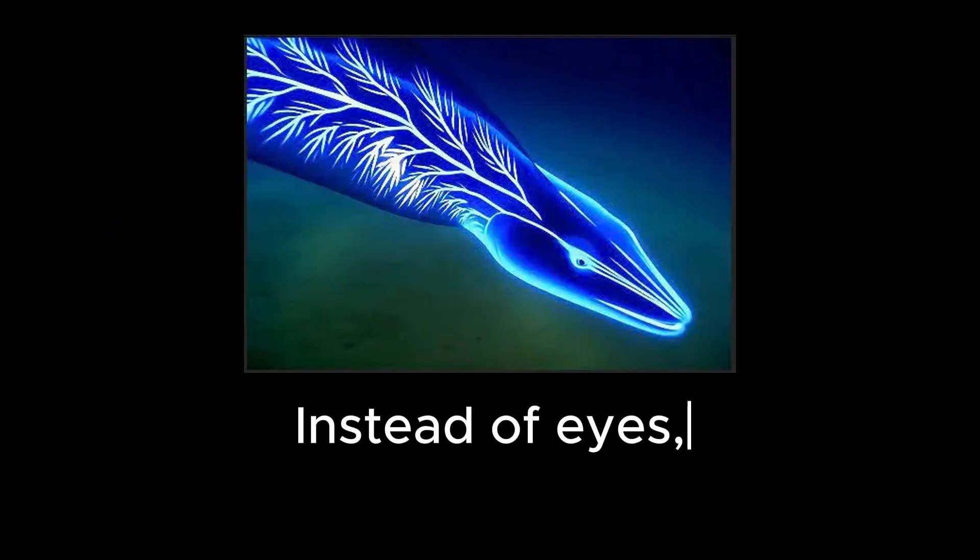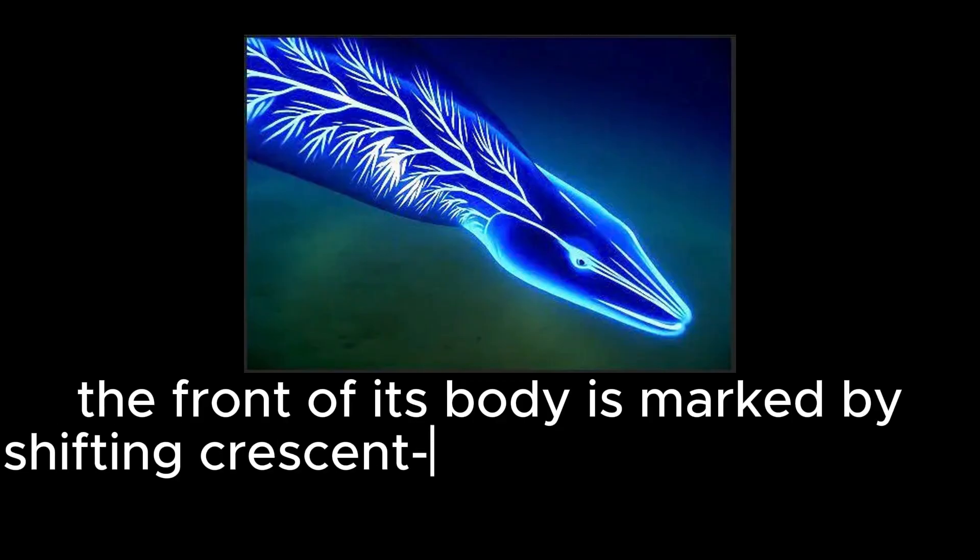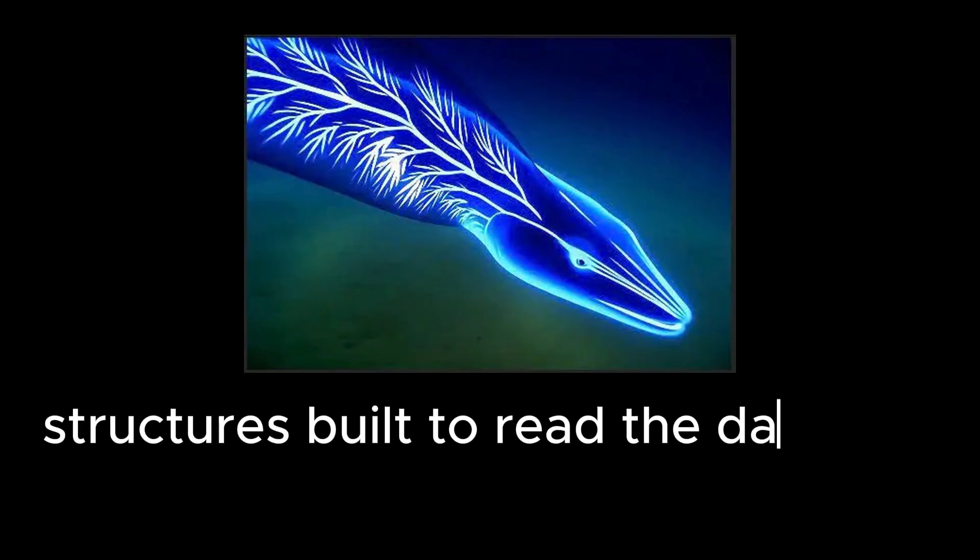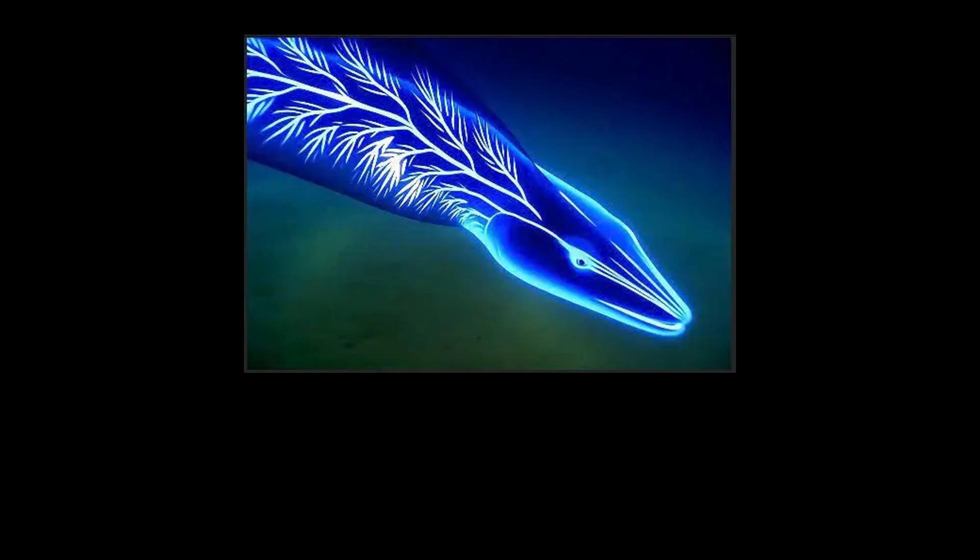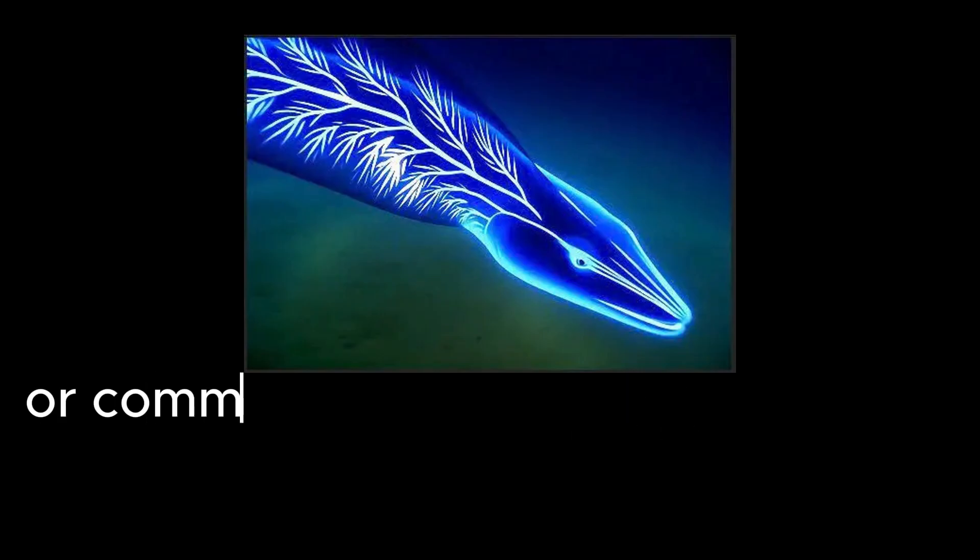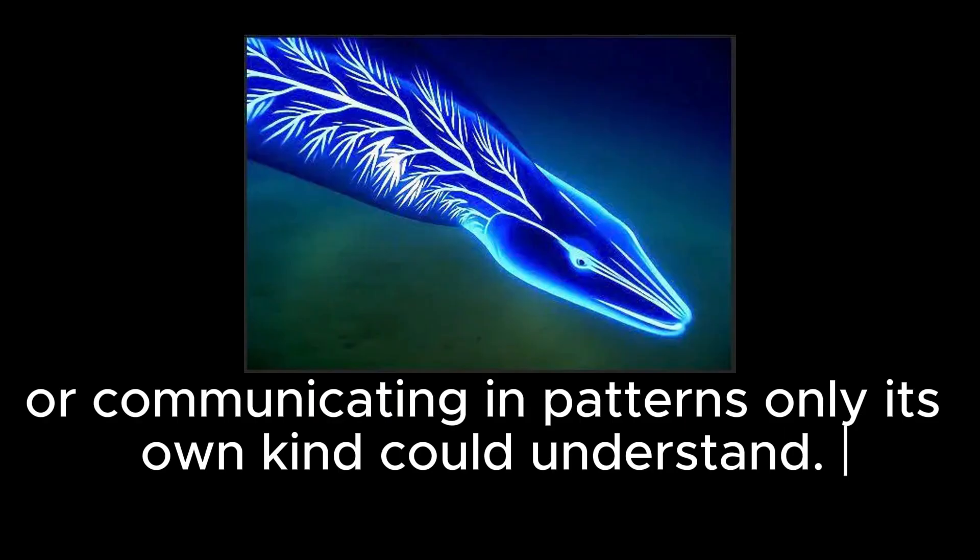Instead of eyes, the front of its body is marked by shifting, crescent-shaped bands of light. Flickering blue, restless pulse. They behave less like organs of vision and more like luminous sensors, structures built to read the darkness rather than simply see through it. Their uneven rhythm hints at something active, almost intentional. It's as if the creature is scanning its surroundings, or communicating in patterns only its own kind could understand.